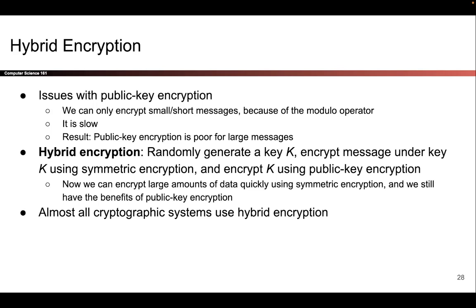The second thing she does is take her really long message and encrypt it quickly using the symmetric key K — this is where the benefits of symmetric key encryption come in — and then she sends the encrypted message to Bob. When Bob receives the message, he receives two things: the encrypted key, which he uses public key cryptography to unlock, giving him the symmetric key so he can quickly decrypt the large original message.